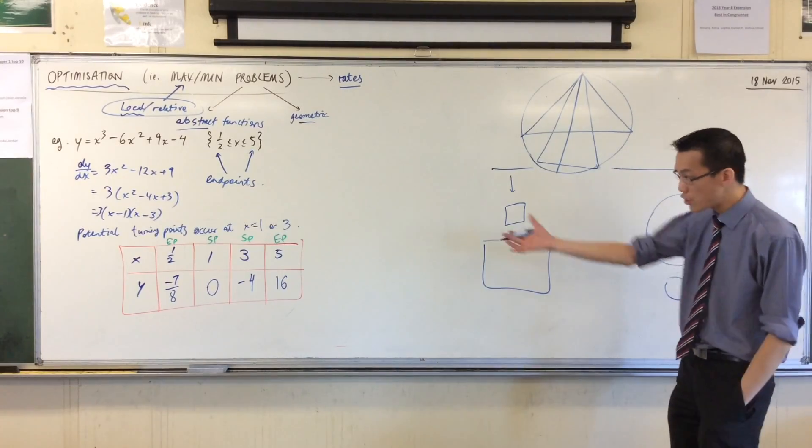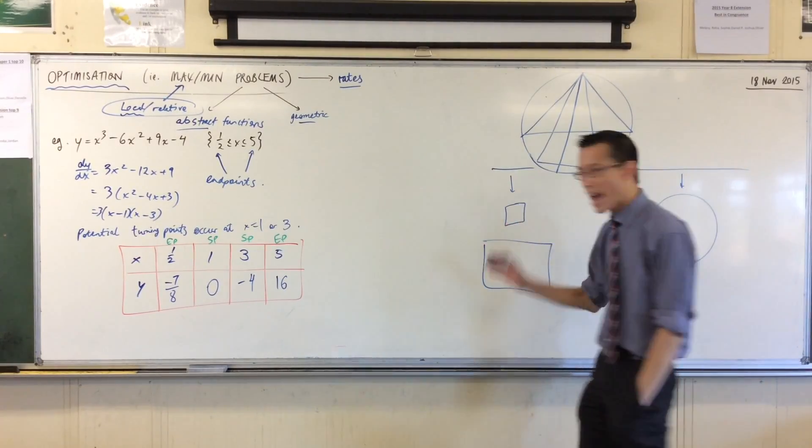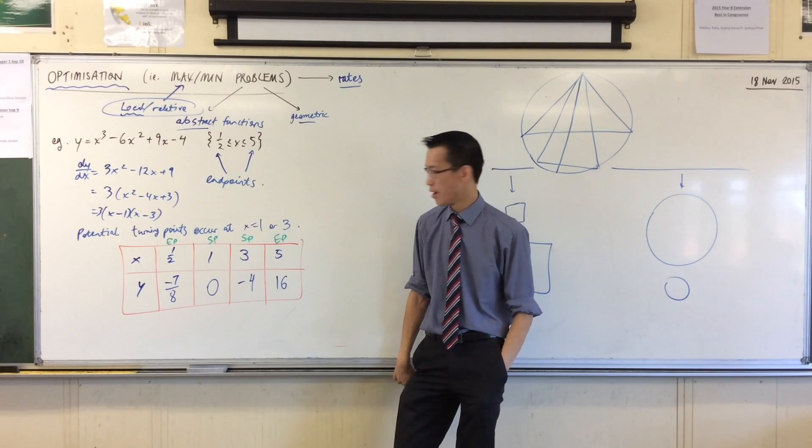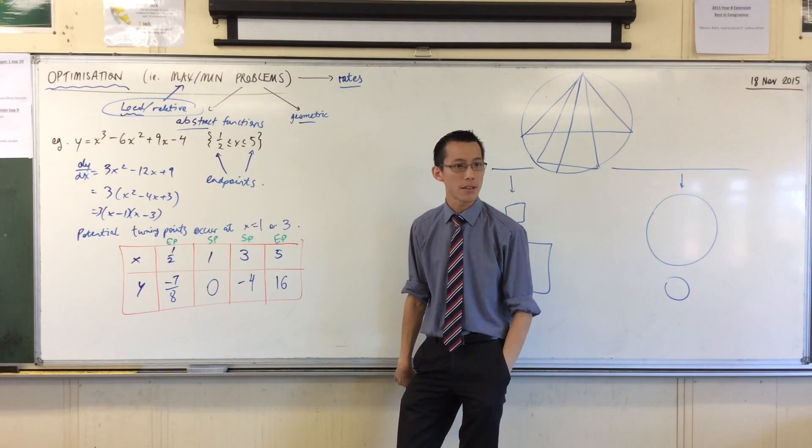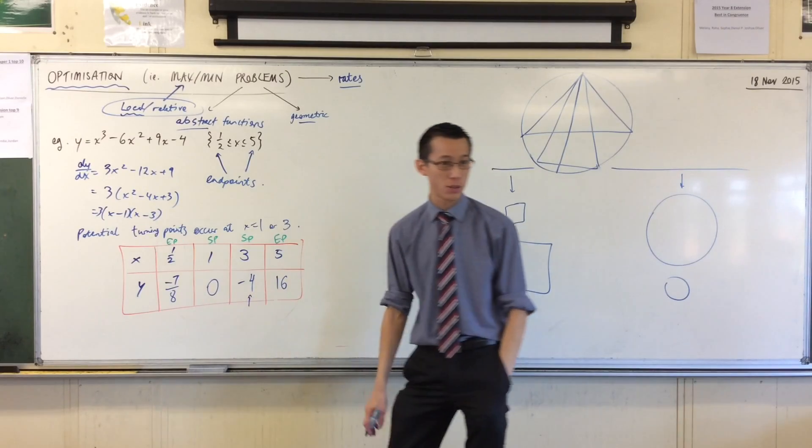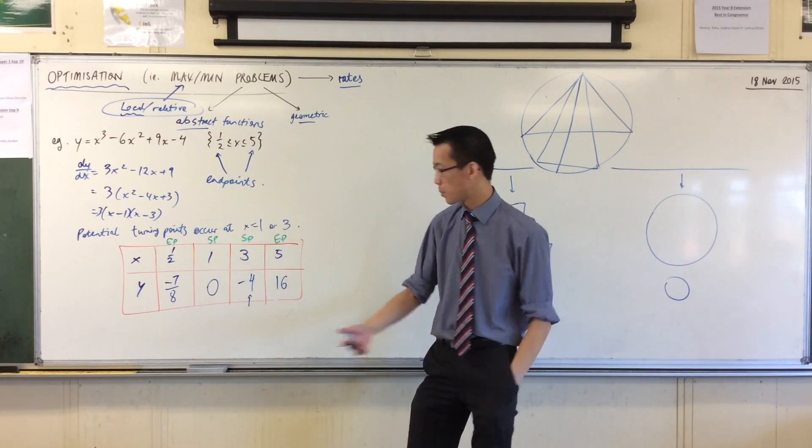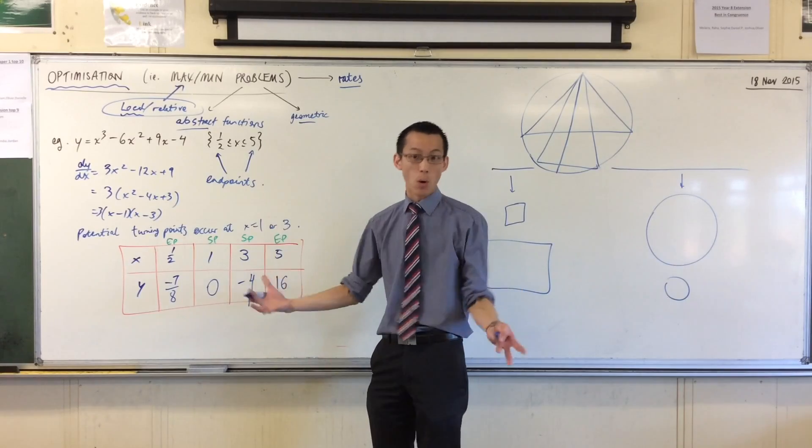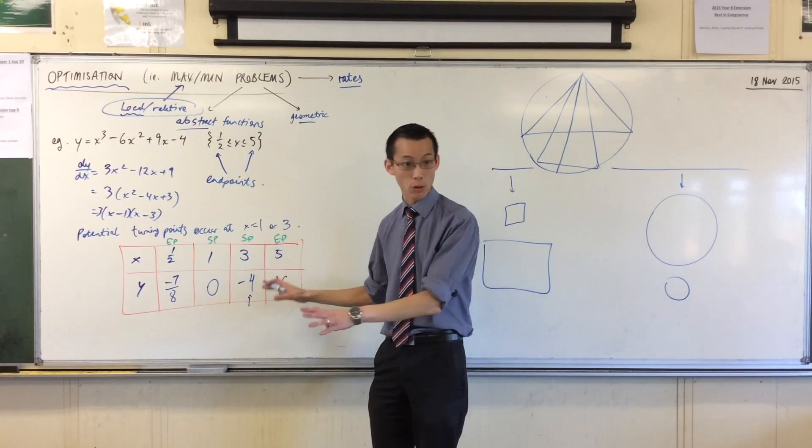Now the really interesting thing happens when you look at this. I've got all the possible places where I could be highest or lowest right? What's the lowest you can see? Negative four right there's the minimum the actual minimum which happens to correspond with the stationary point. So this relative minimum is also the absolute minimum. I'll write that all out in a second.